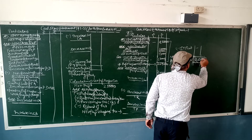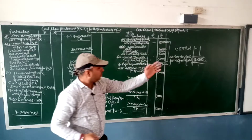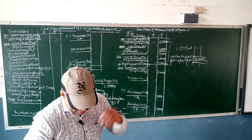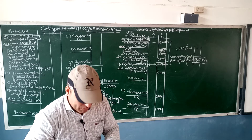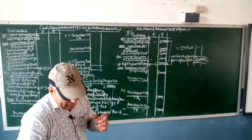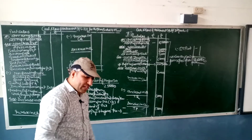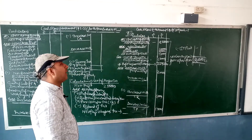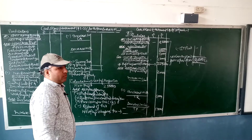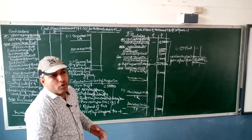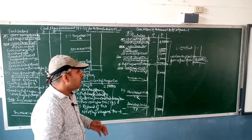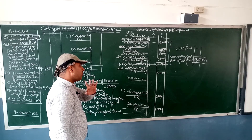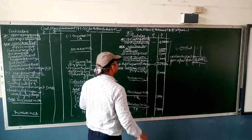So question number 7 is done, 2,65,000. Now question number 8: there is a bank overdraft. It is a financing activity — even though it's a current liability, in the cash flow statement, bank overdraft is treated as a financing activity. So bank overdraft current liability goes to financing activity, not operating activity.